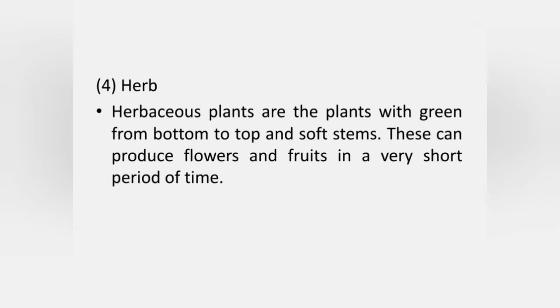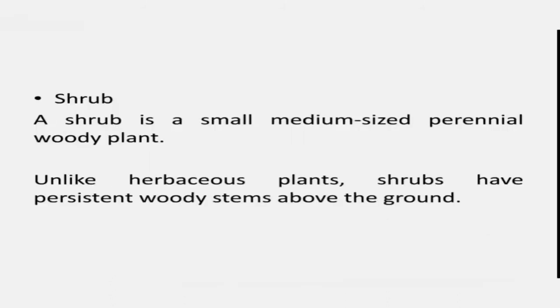Herbaceous plants are plants with green stems from bottom to top and soft stems. These can produce flowers and fruits in a very short period of time. A shrub is a small, medium-sized, perennial woody plant. Unlike herbaceous plants, shrubs have persistent woody stems above the ground. Shrubs can be deciduous or evergreen.